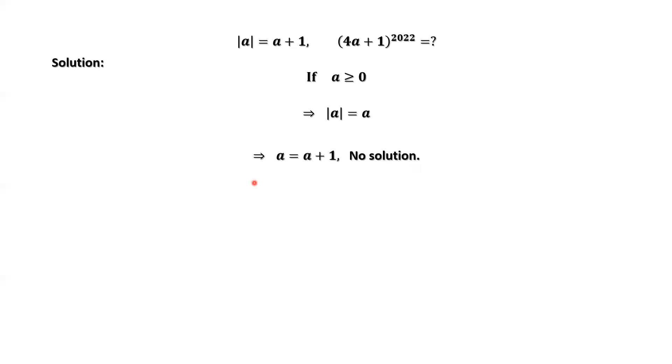For the second situation, if A is negative, we have absolute value of A equals negative A. Replacing absolute value of A by negative A from this given equation, we have negative A equals A plus 1. This implies A equals negative 1 half.